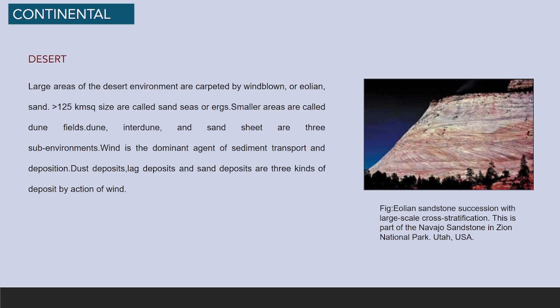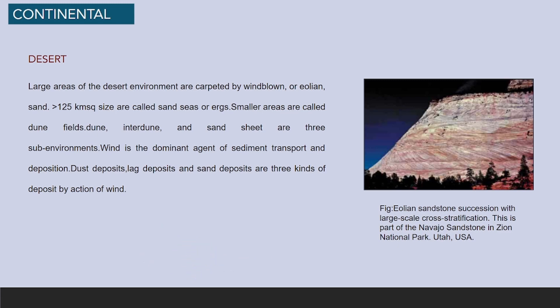Large areas of the desert environment are carpeted by wind-blown or aeolian sand. Areas more than 125 square kilometers in size are called sand seas; smaller areas are called dune fields. Dune, interdune and sand sheet are three sub-environments. Wind is the dominant agent of sediment transport and deposition. Dust deposits, lake deposits and sand deposits are three kinds of deposits produced by the action of wind.